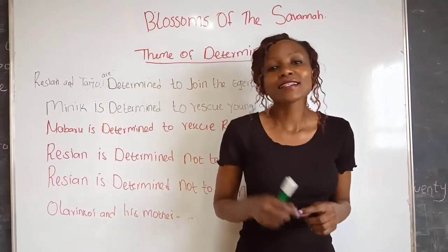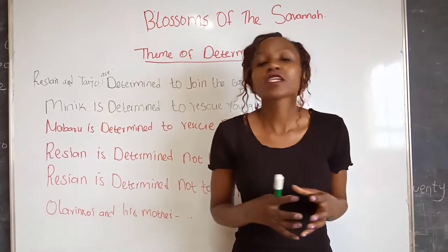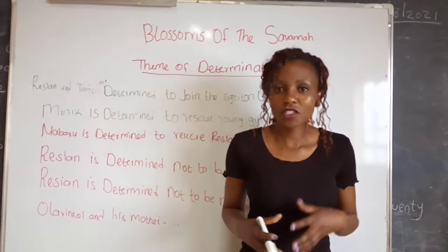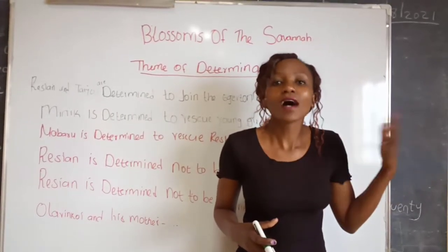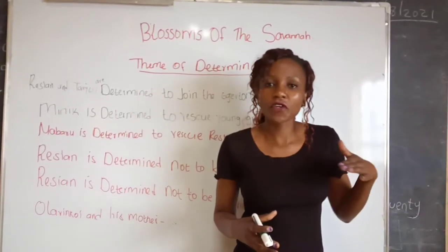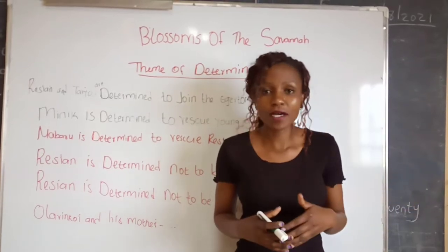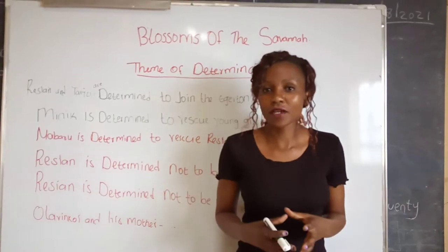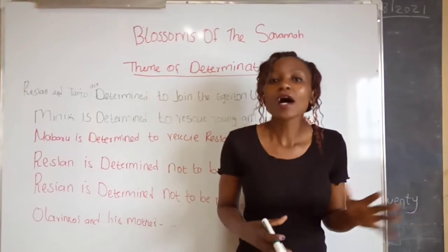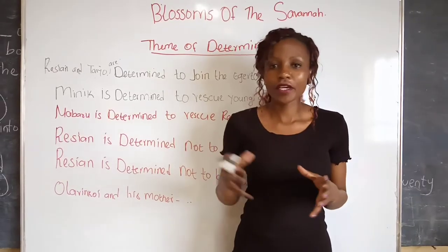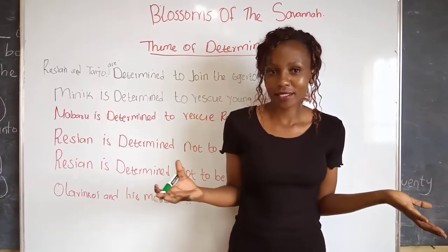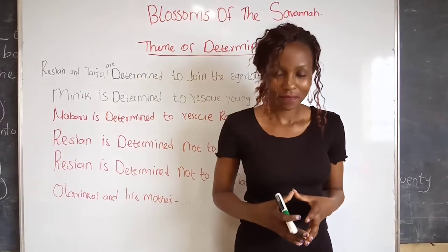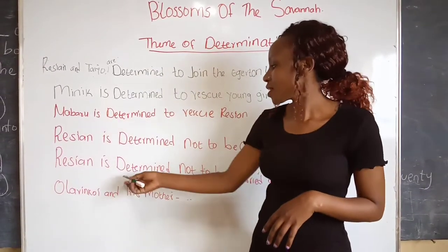Number three, Resian is determined not to be circumcised. She said she would be circumcised over her dead body, which is why she had to escape from home — because in that community, you must be circumcised before you can be married. When she escaped, she landed in the hands of Olarinkoi, who betrayed her and wanted to have her circumcised. Through the help of Nabaru, she managed to escape, and she made Minik ole Ingwitoy her role model.